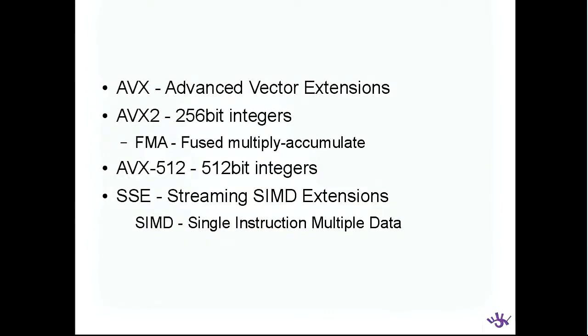Advanced vector extensions are part of Intel — I'm talking about only Intel-specific things here, though some of these are also supported on AMD CPUs. Advanced vector extensions allow you to bundle data into larger registers. We have different AVX extensions: the first was 128 bits, then 256, and now we have 512-bit AVX.